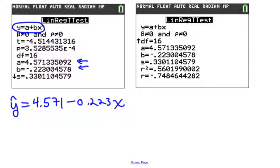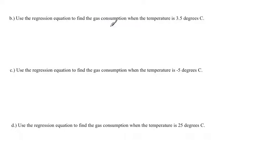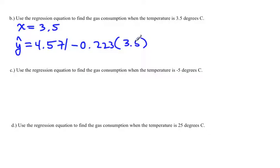Let's see what we can do with this equation. We want to use the regression equation to find the gas consumed when the temperature is 3.5 degrees. Remember, x is the temperature, so we just told you that x is 3.5, and we want to know what the y is. Our regression equation, or sometimes called the least squares line, or sometimes called the best fitting line, is 4.571 minus 0.223 times x, but x we've just decided in this example is 3.5.